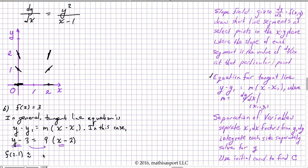I'm going to write 9 times 2.1 minus 2 plus 3. And that equals, what is this? This is 0.1, 9 times 0.1 is 0.9 plus 3 equals 3.9. That's it.